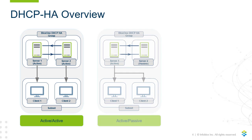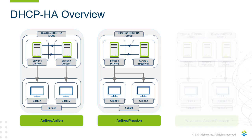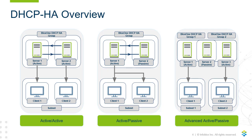In the second configuration, Active-Passive, only one DHCP server handles all DHCP requests. If the primary server experiences an outage, the other server will begin handling DHCP requests until the primary server comes back up. Active-Passive is beneficial in environments where load balancing is not a concern, but service uptime is. In the third and final configuration, Advanced-Active-Passive, a passive server can be assigned to multiple HA groups. If an active server experiences an outage, the passive server will handle all DHCP requests that the effective High Availability group was assigned to. When the primary server comes back up, it will begin serving DHCP requests again, returning the passive server back to standby.